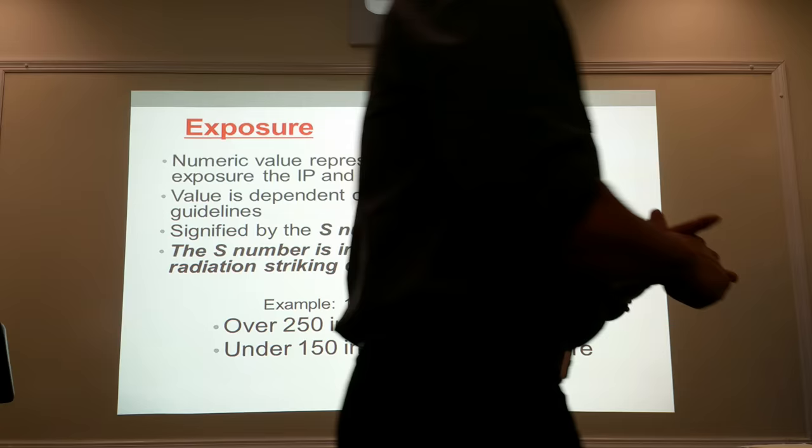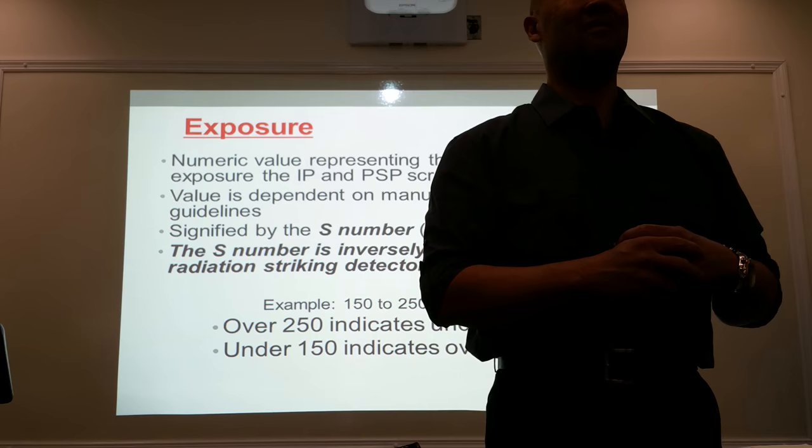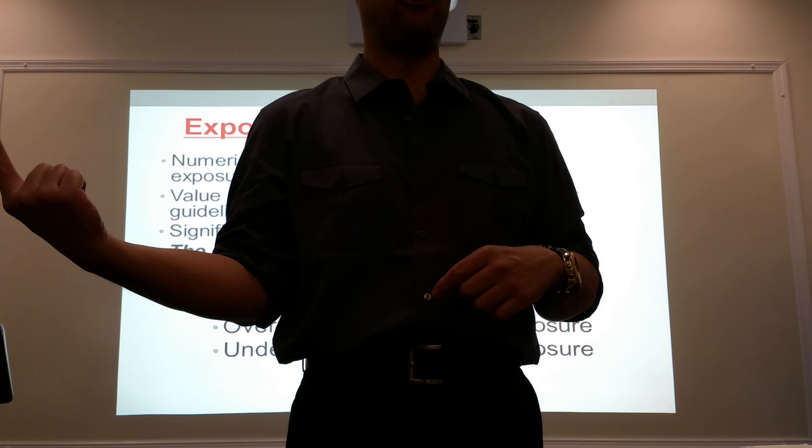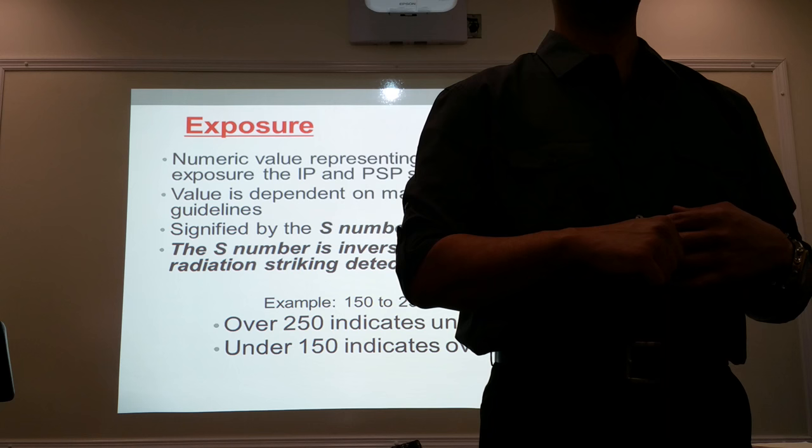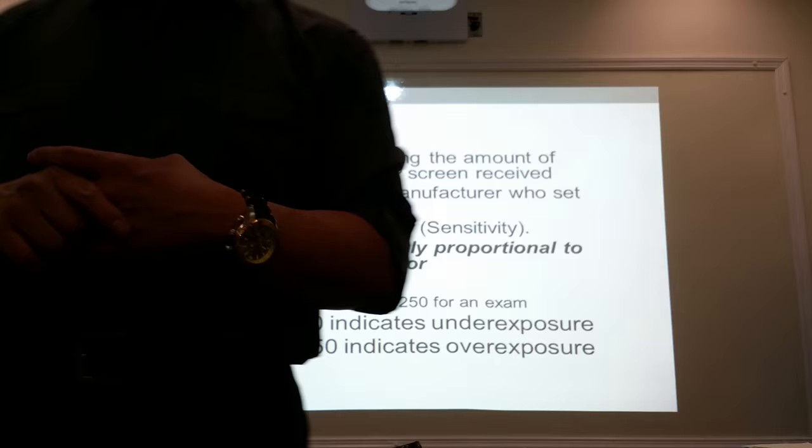When you had film radiography, if your film came out too light or too dark, that also told you that you overexposed or underexposed your patient. So how your film came out also determined whether or not you used the appropriate technical factors in acquiring that image. With computerized radiography, it doesn't matter what technical factors you use because the algorithm and the software program corrects it for you every time.